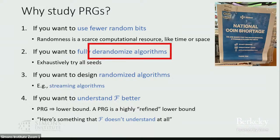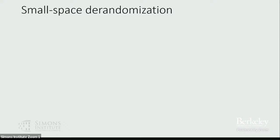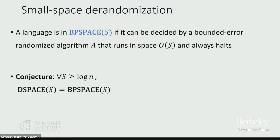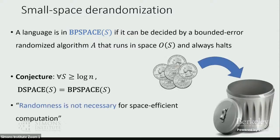I want to go back to the topic of de-randomizing algorithms. This has been a traditional goal in complexity theory for a long time. We would like to understand the role of randomness in computation — to take randomized algorithms and convert them into deterministic algorithms while retaining efficiency by other measures such as space complexity. BPSpace S is the class of all languages that can be decided by randomized algorithms using O of S bits of space. The commonly believed conjecture is that BPSpace S coincides with deterministic space S — that randomness is not actually necessary for space-efficient computation.